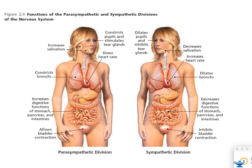Parasympathetic constricts your bronchi. Everyone who's ever gotten really upset notices their breath gets super constricted — and your body is trying to say 'calm down,' limiting your breathing to start slowing you down.